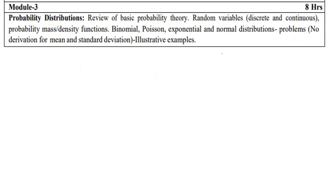Moving on to Module 3 — probability distribution. In probability distribution you are going to have two types: one is continuous distribution and another is discrete distribution. In discrete distribution, you are going to have binomial distribution and Poisson distribution.